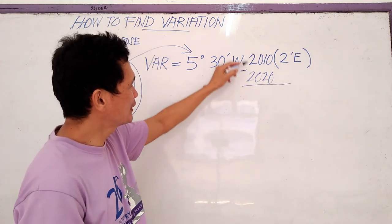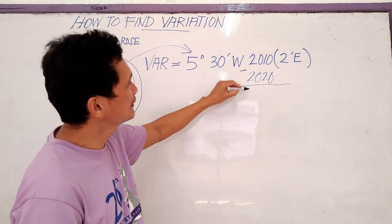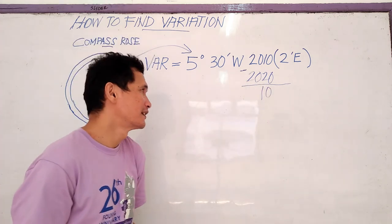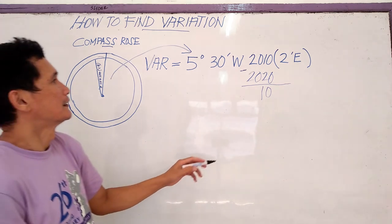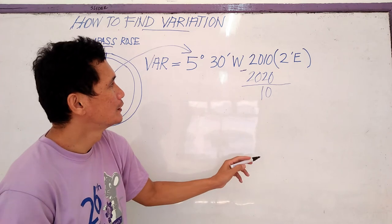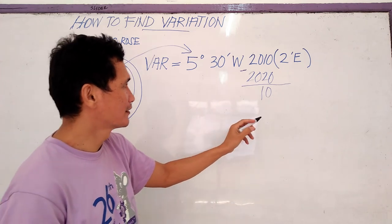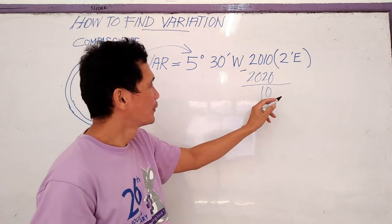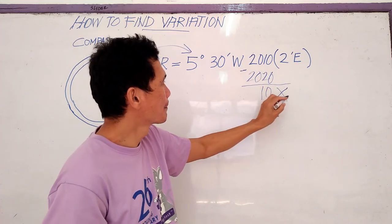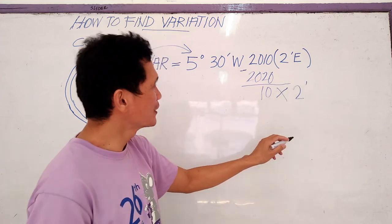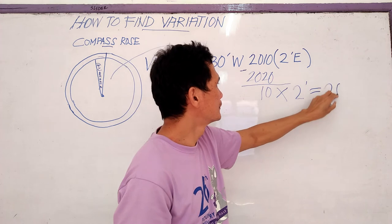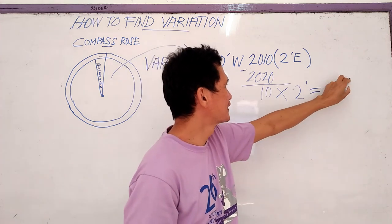2020 minus 2018 is 10 years. And the yearly change is 2 minutes east, so 10 years times 2 minutes equals 20 minutes.